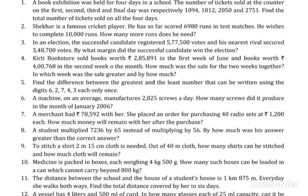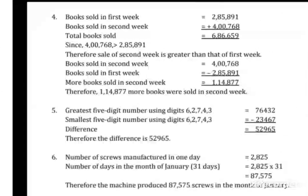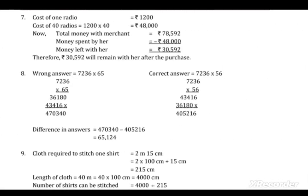The eighth question: a student multiplied 7,236 by 65 instead of multiplying by 56 as required. By how much was the answer greater or less? We calculate both: the wrong answer is 7,236 × 65 = 470,340. The correct answer is 7,236 × 56. Then subtract the correct answer from the wrong answer to find the difference.